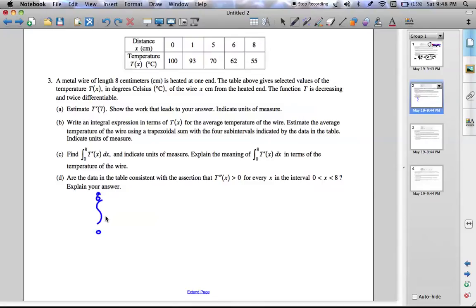from its limits, 0 to 8, dx over the upper limit minus the lower limit. So that's your function, actually. That's just your expression, which is the first part of b.